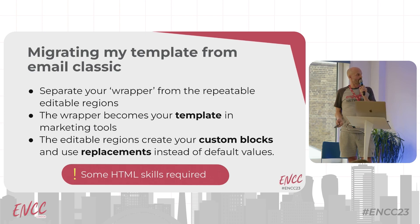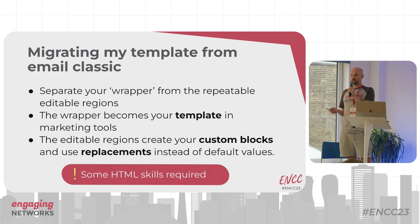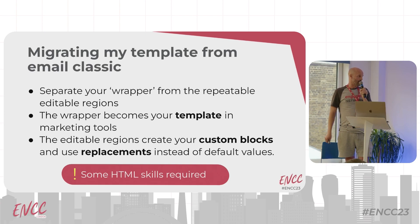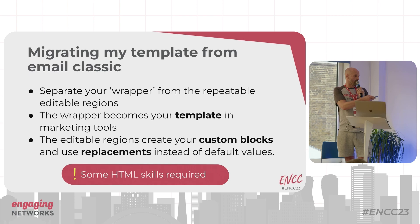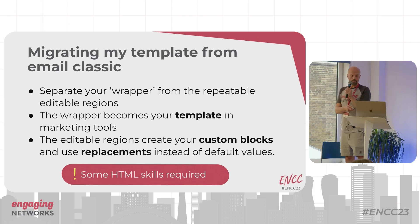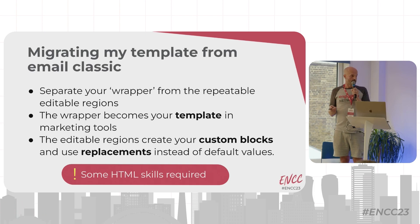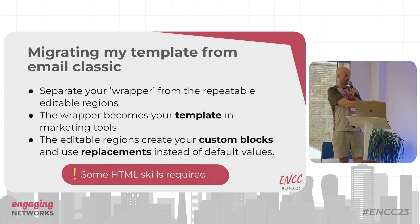To migrate from email classic: if you've got a template in email classic that you like and it works well, you or a partner would separate the wrapper of the template and take that out — that becomes your template in marketing tools. Then the repeatable editable regions in email classic would become your custom blocks, and the default content from those regions would be set up using replacements so content creators can replace that default content. Some HTML skills are required.